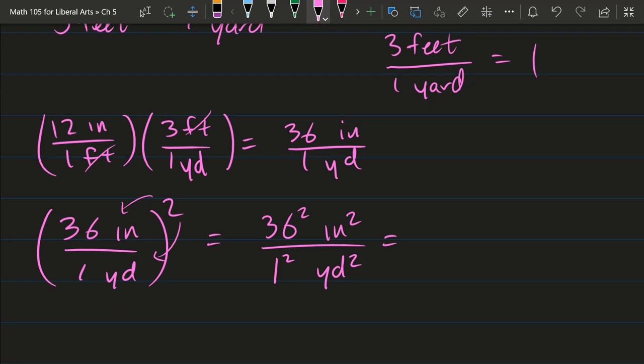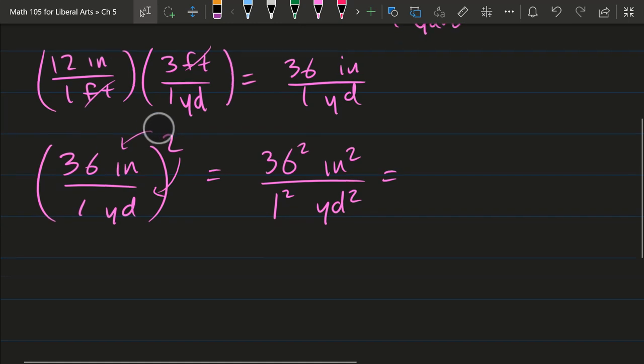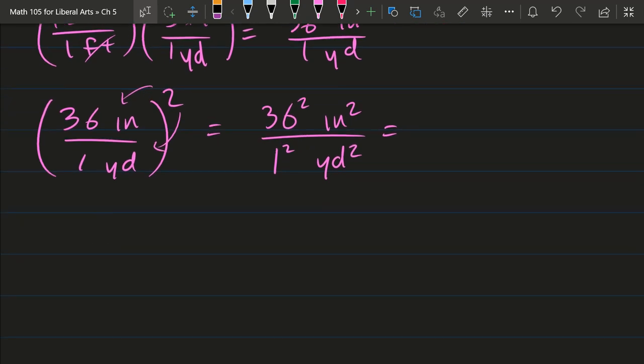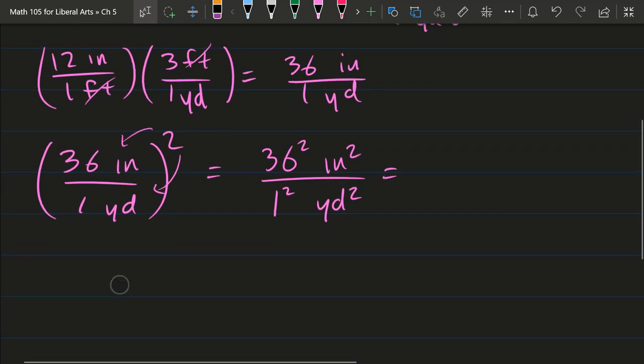So we got 36 squared and I'll just fill in that number later. So this is square inches per square yard. Sometimes you'll see the units in SQIN divided by SQYD. So that'll be square inches per yard.